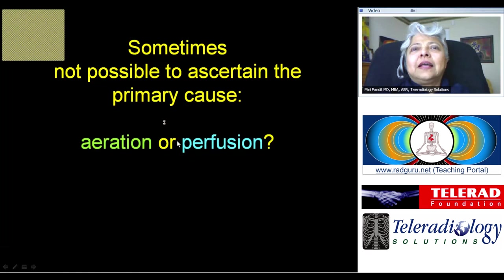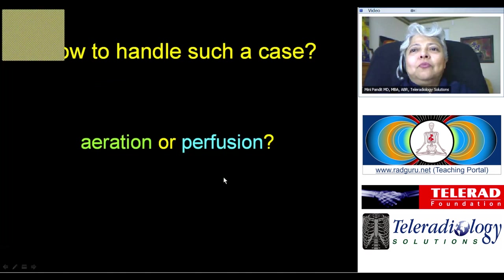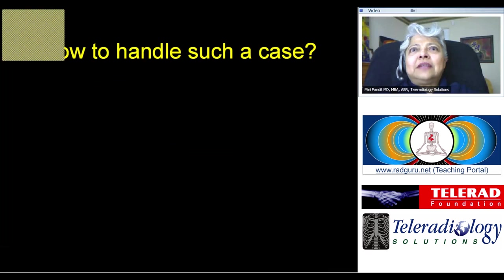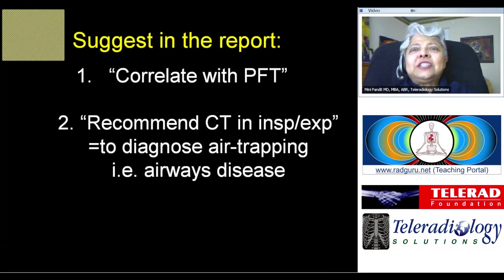Sometimes it may not be possible to ascertain with certainty the primary cause — is it aeration or perfusion? In such a situation, you should suggest in the report correlating with pulmonary function tests, or recommend CT in inspiration and expiration. That will help differentiate the two possibilities. If the patient has airways disease, you would be able to show air trapping and confirm that it is due to differing aeration.